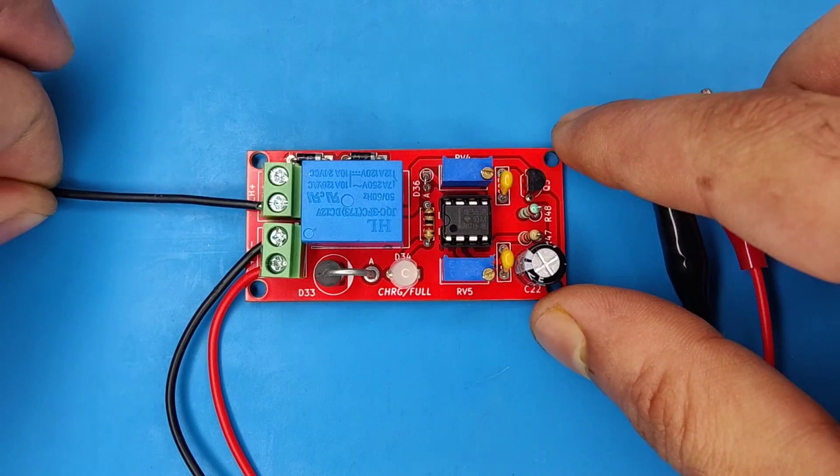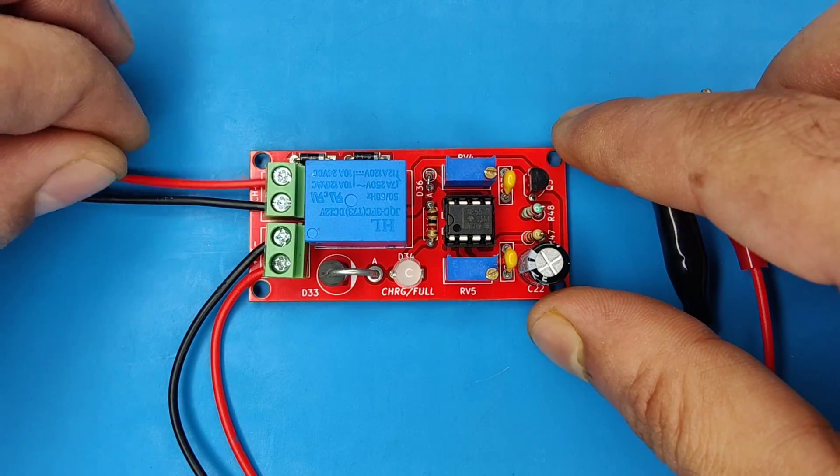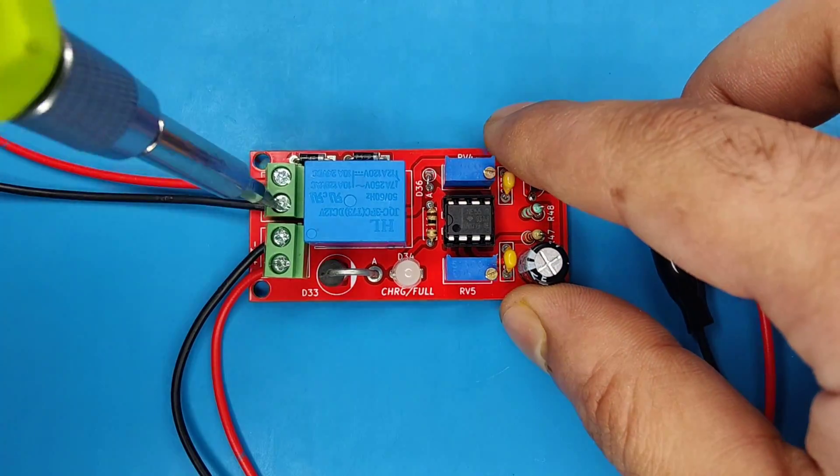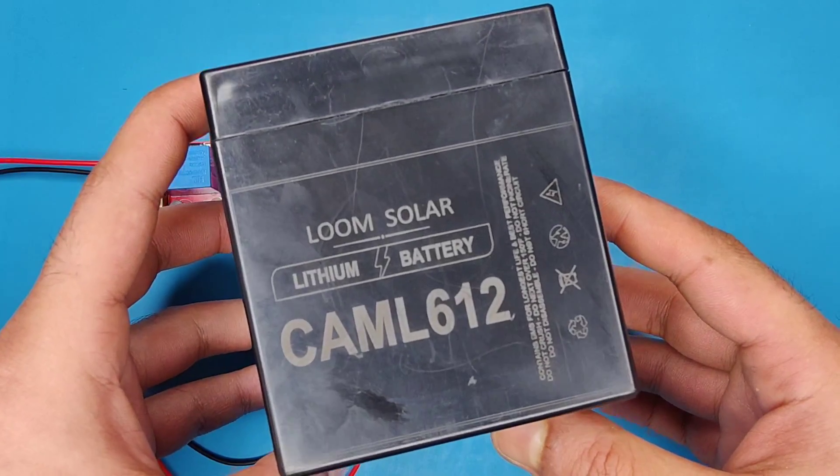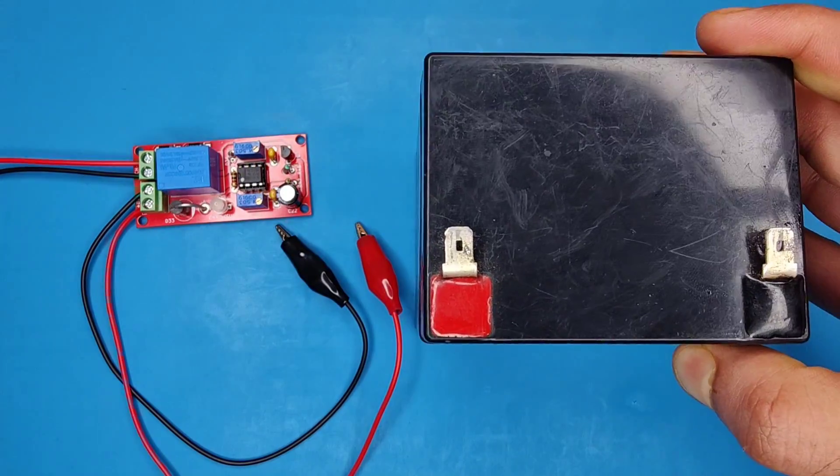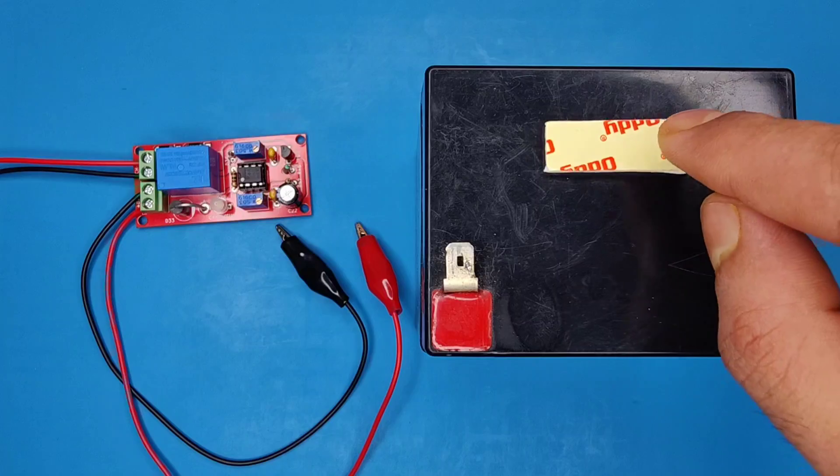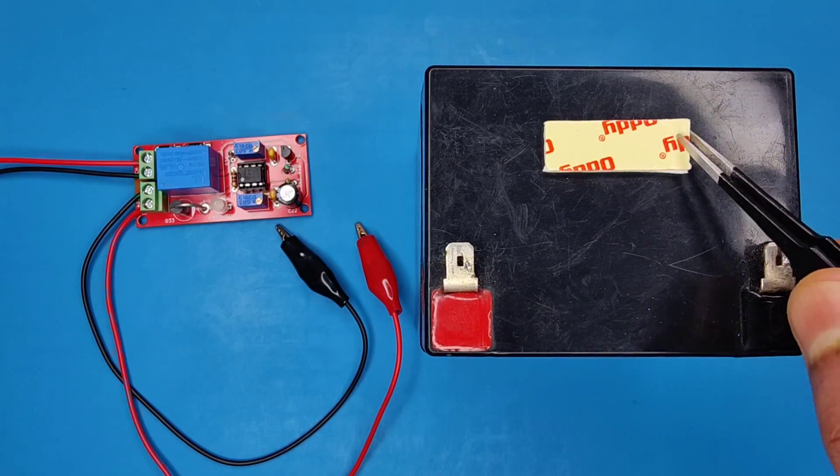Now add the input wires in the connector. I used this 12 volt battery for testing. I used double sided tape to fix this module on the battery.